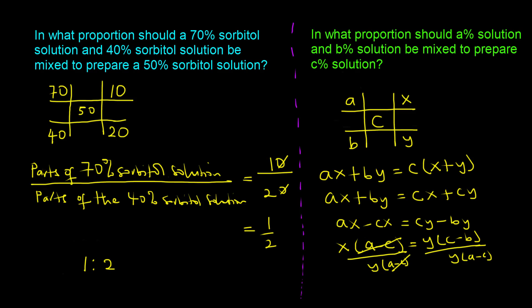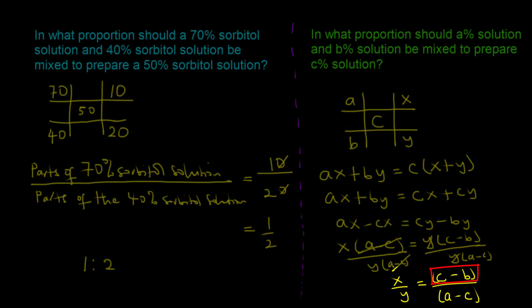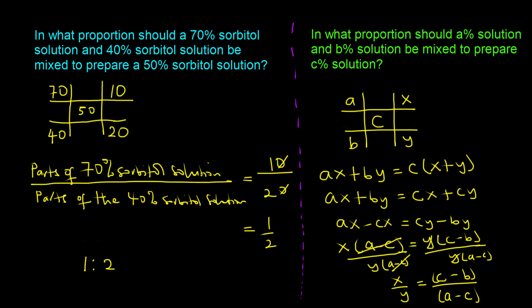After cancellation, you end up with the proportion x over y equal to (C minus B) divided by (A minus C). So anytime you want to find the proportion in which two solutions of different concentrations should be mixed to give a desired concentration, you subtract the lower concentration from the desired, then divide by the difference between the higher concentration and the desired. It always works.